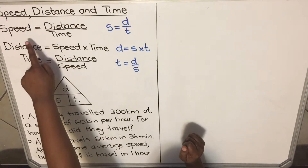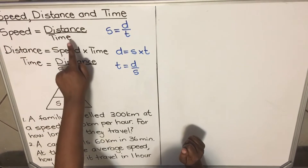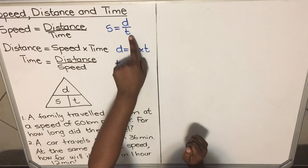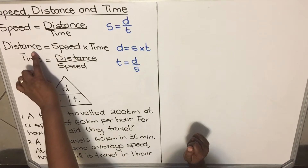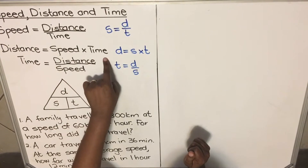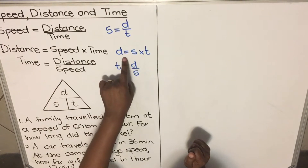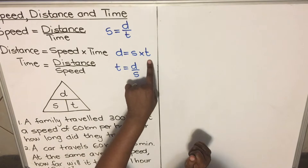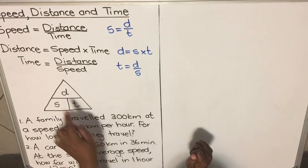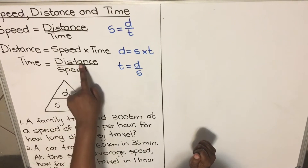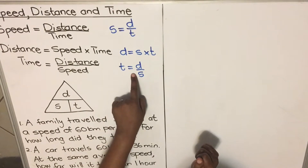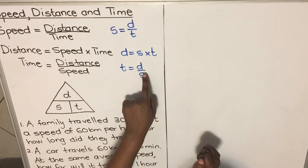The first formula for calculating speed is distance over time — you write s = d/t. For calculating distance, it's speed times time, so d = s × t. And for time, it's distance over speed, so t = d/s.